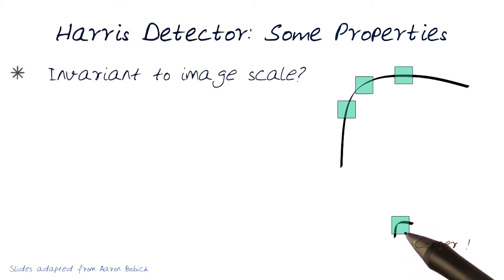This, of course, in this detector will be a corner. This will not be at this window size detected as a corner. In fact, they will all be listed as edges as you'd expect.